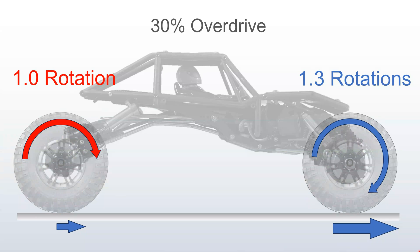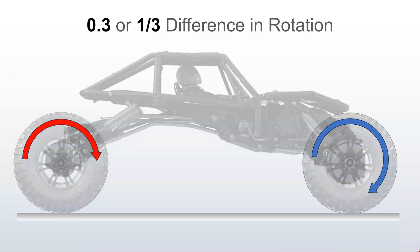Now, there are several ways to calculate overdrive: percent difference, percent change, percent increase. For this, we'll just assume percent increase, which is 30% overdrive means 30% more rotation in the front. That means a 0.3 difference between front and rear, or one third additional rotation in the front.